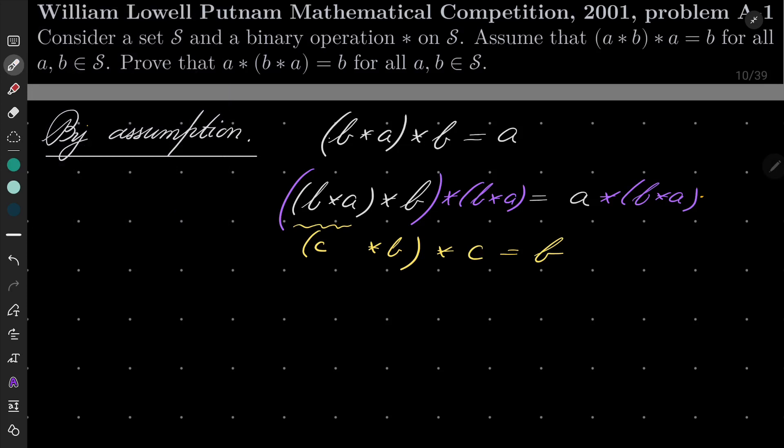Because now we know, again, by assumption, by assumption, b star a star b star b star a is just b.